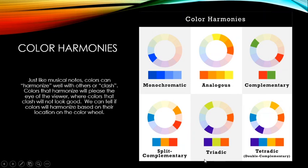A triadic harmony makes an equilateral triangle on the color wheel, picking three colors equally spaced apart. You can spin that triangle to get any combination — for example, pointing to spring green, orange, and a darker purple. It's three colors equally distanced from one another.